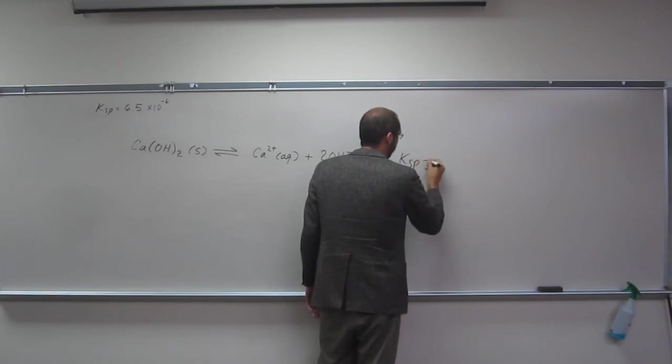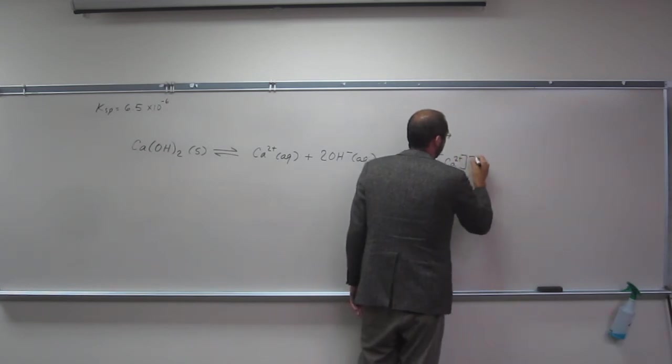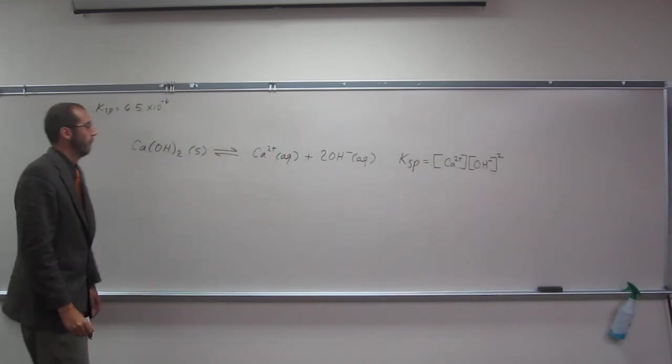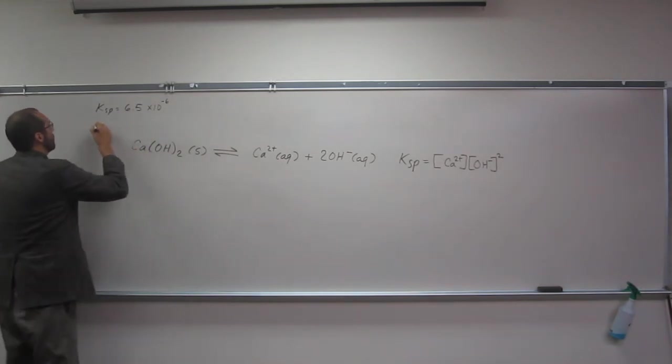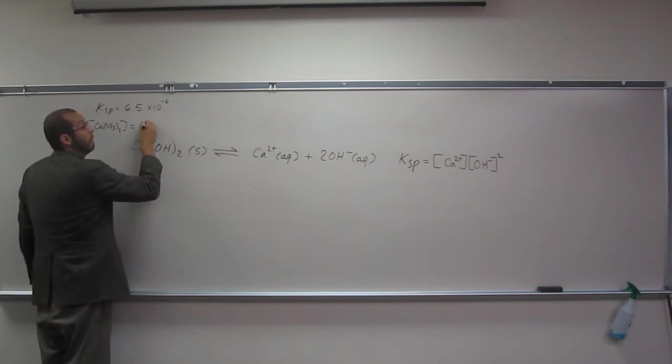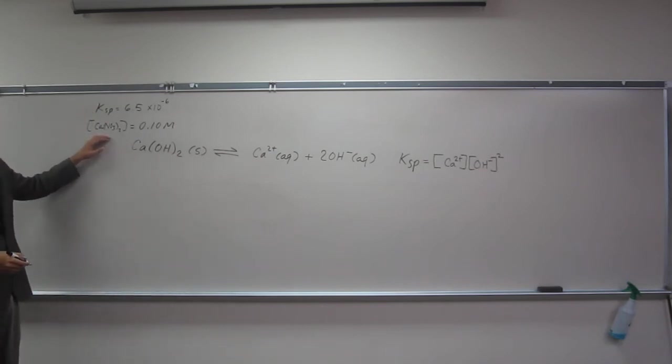Let's write the Ksp expression. So in order to do this one, it gives us the concentration of Ca(NO3)2 is 0.10. So if you recall, like we said, the NO3 is the spectator ion. So that's going to be the same as the initial concentration of Ca2+. Is everybody okay with that?